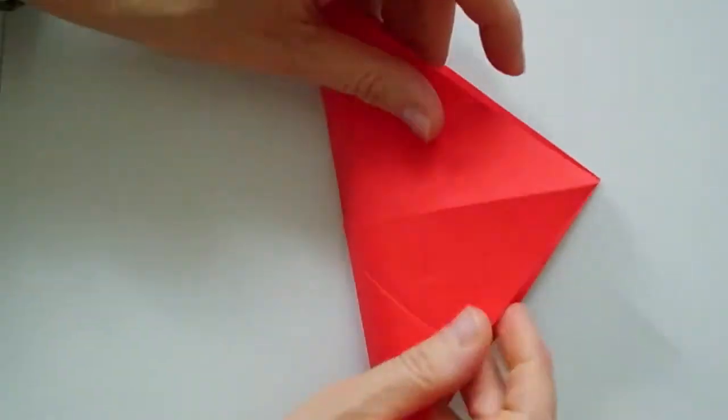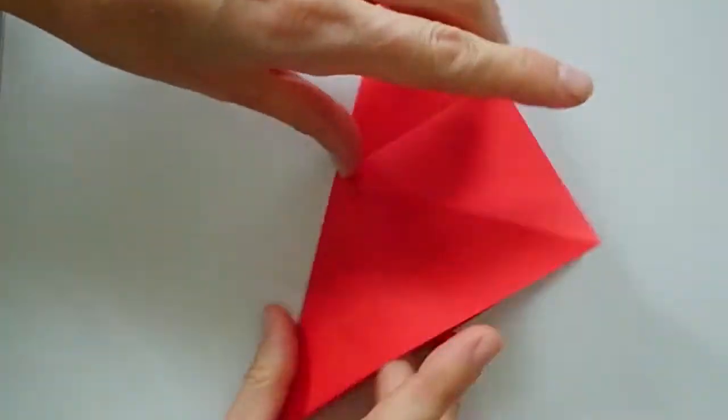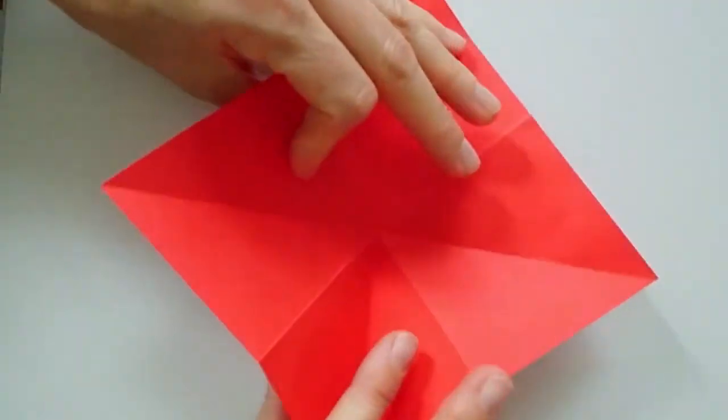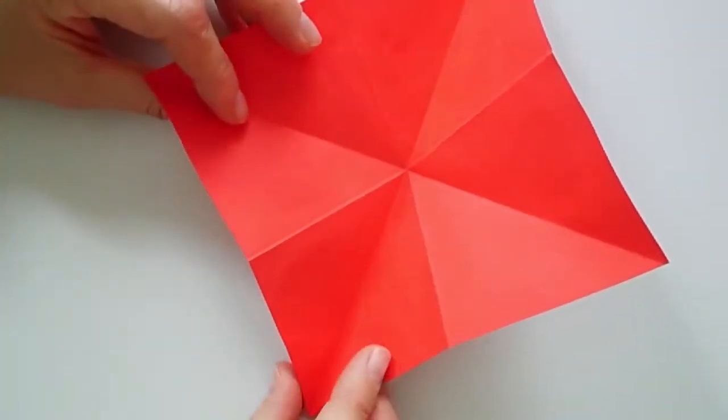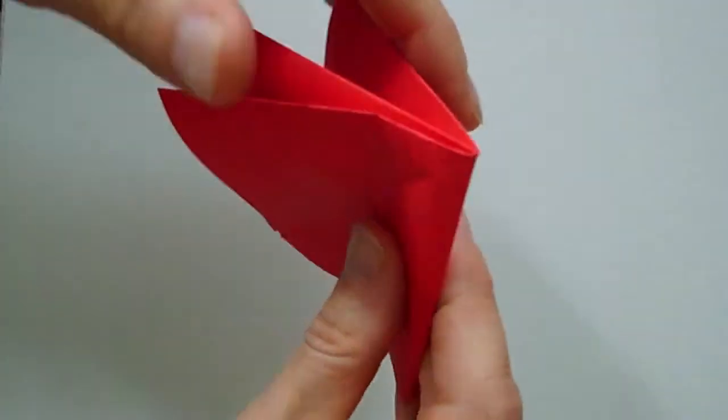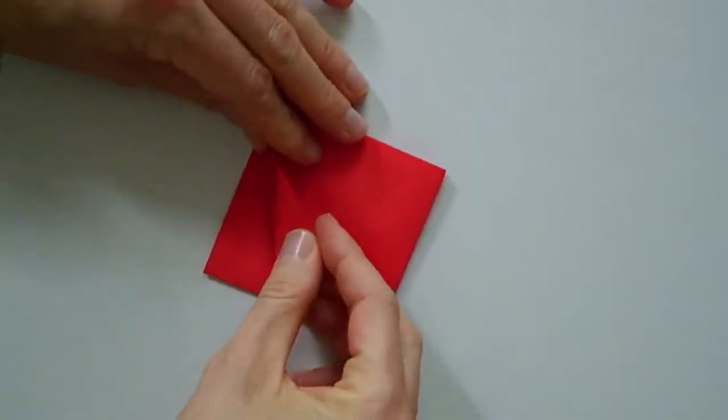Then turn the paper over and fold both diagonals. After that, fold all folds we just made at the same time.